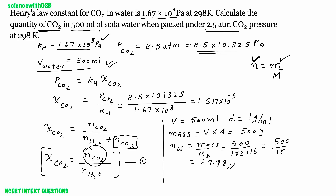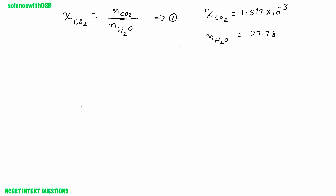Now we know the mole fraction of CO2 (1.517 × 10⁻³) and the number of moles of H2O (27.78). Using the simplified equation, number of moles of CO2 = mole fraction of CO2 × moles of H2O = 1.517 × 10⁻³ × 27.78, which gives 42.14 × 10⁻³ moles.